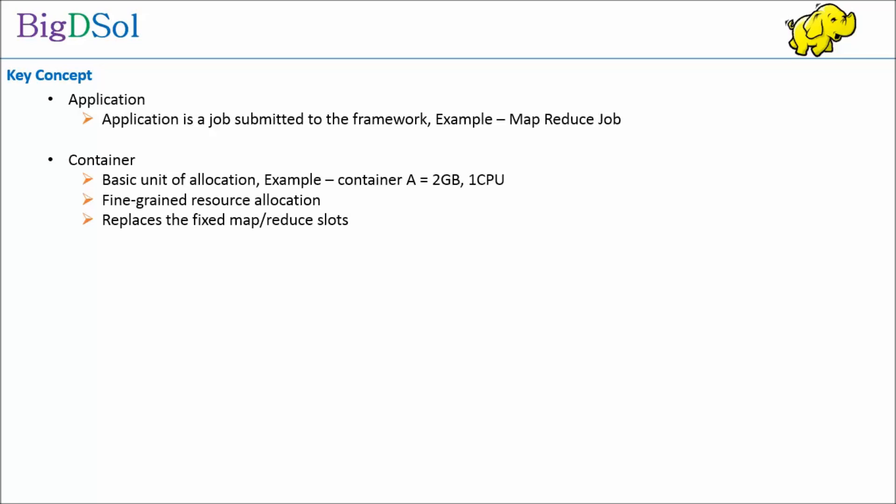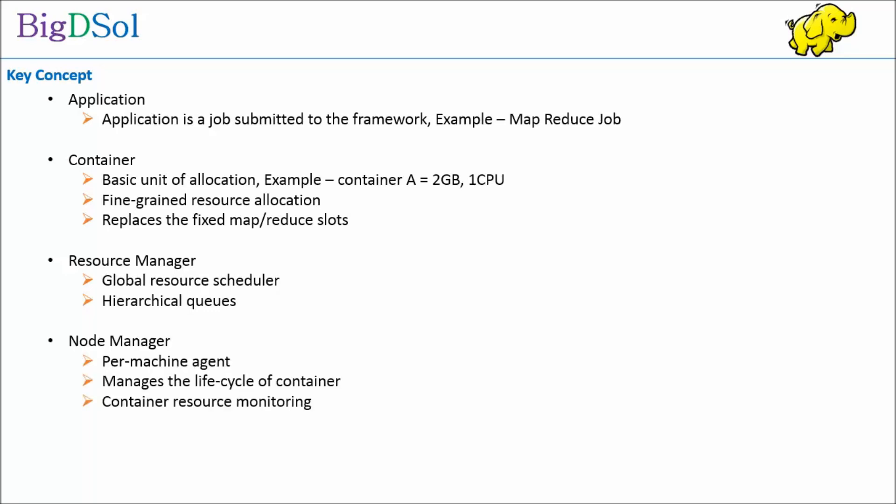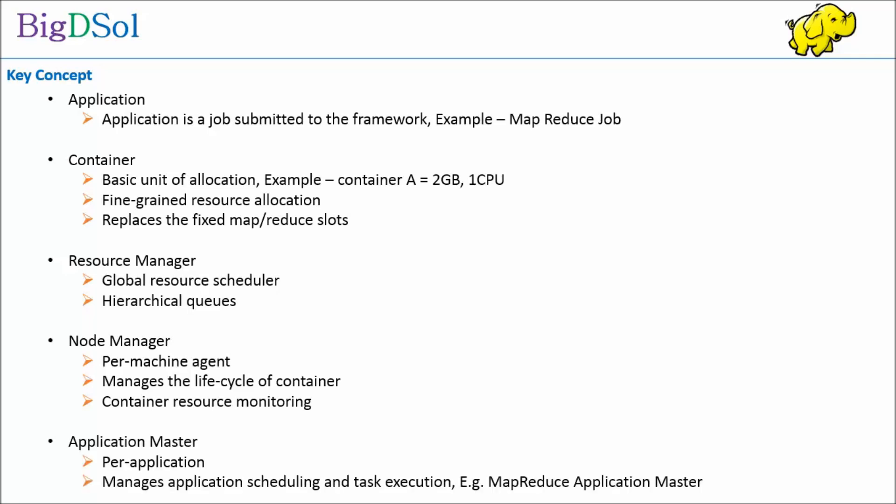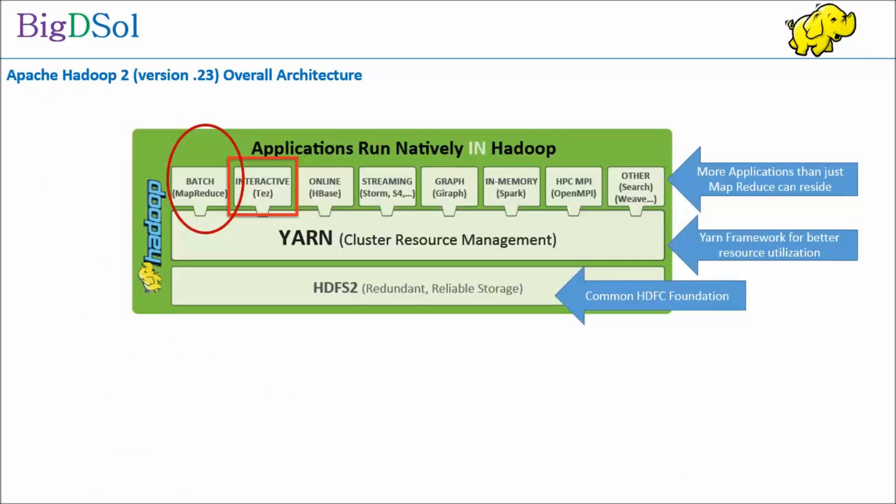'Node Manager' acts as the per-machine agent — it manages the lifecycle of containers and performs container resource monitoring. 'Application Master' operates at the per-application level and manages application scheduling and task execution, e.g., a MapReduce Application Master. Now that we know the key terms, let's look at the high-level architecture — you can see more number of applications than just MapReduce.